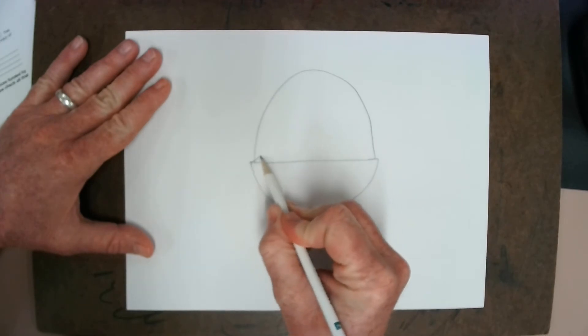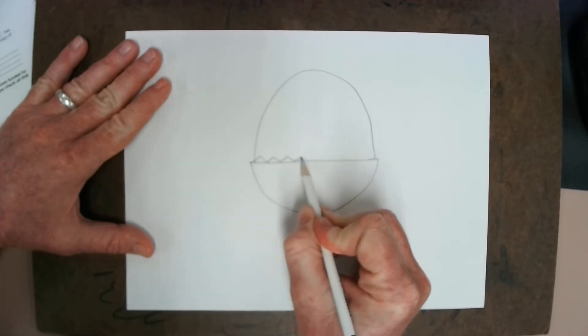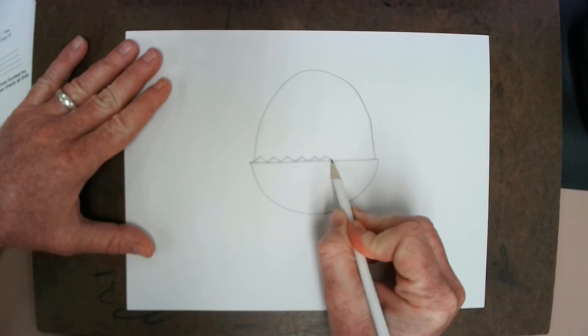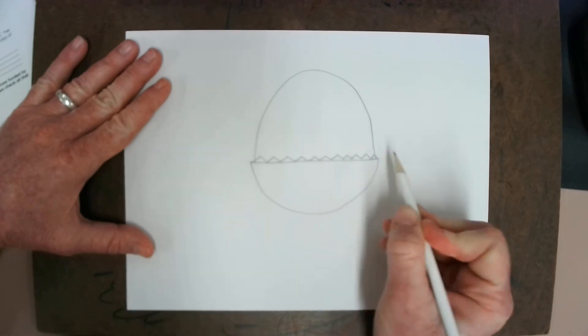And we're going to use a zigzag line to make some silly teeth. And it looks like these teeth might be sticking out from the bottom jaw.